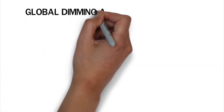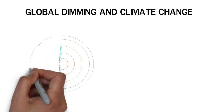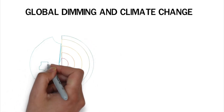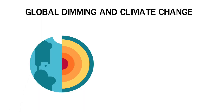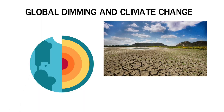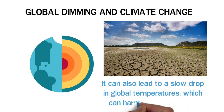Global dimming and climate change. Earth may not be as bright as it used to be because of global dimming. Particulates in the air not only change the climate, but they also disrupt ecological systems. Global dimming has caused long-term drought in some regions, resulting in the loss of lives and animal habitats. It can also lead to a slow drop in global temperatures, which can harm the environment.